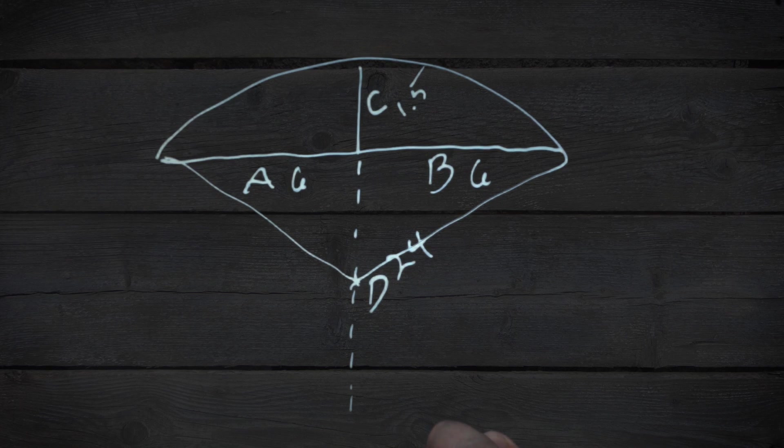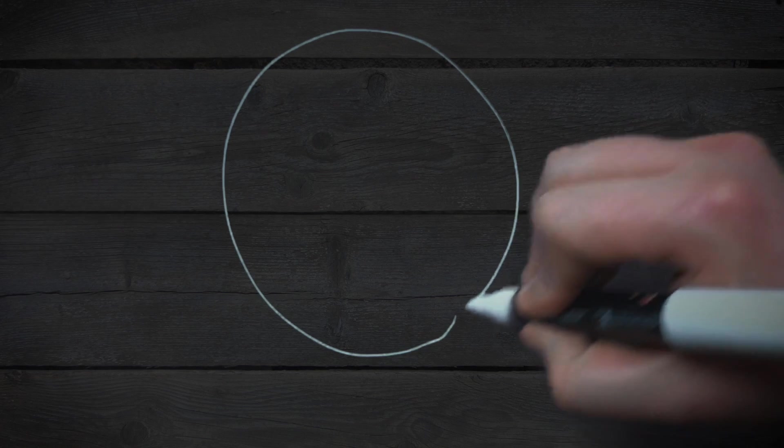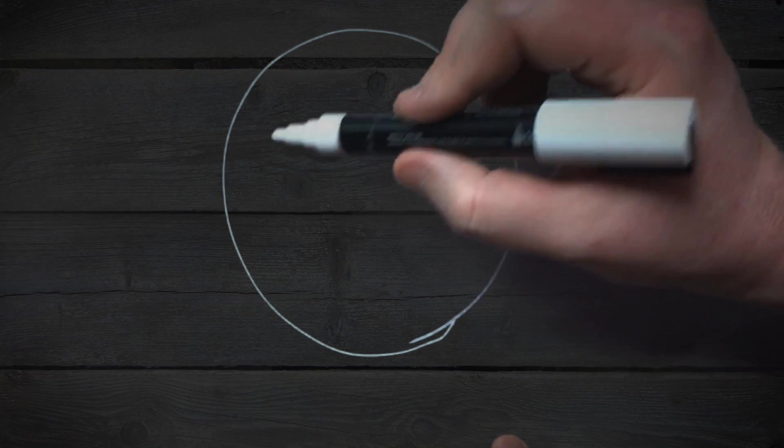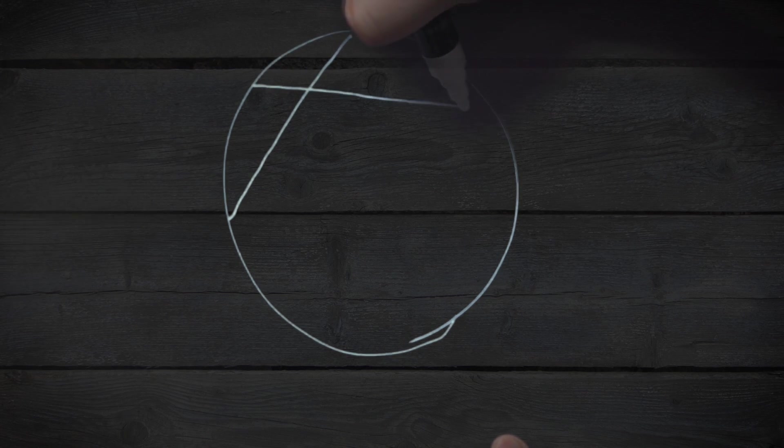Now if you want to know why this works, stick around and I will explain it briefly. The reason this works is because of what's called the intersecting chords theorem, which basically states that if you have a circle and you have any two chords, so a chord being a straight line that connects two points of a circle, it could be of any length.